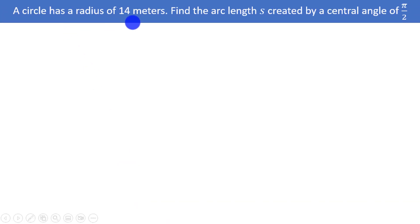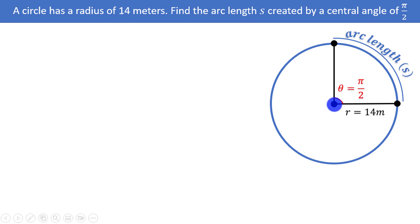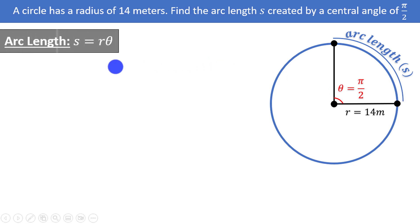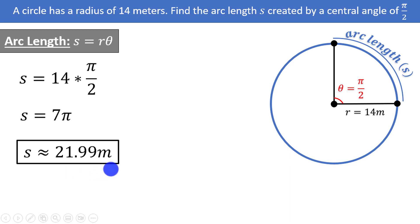A circle has a radius of 14 meters. We want to find the arc length s created by a central angle of π/2. Drawing the picture: we have a radius of 14 meters and an angle of π/2, which is a 90-degree angle. Plugging into the formula: s = 14 × (π/2). Simplifying 14/2 gives us 7π. As a decimal approximation, 7π ≈ 21.99 meters.